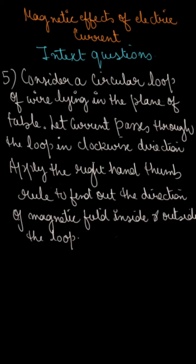Let's look at question number 5. Consider a circular loop of wire lying in the plane of a table. Let current pass through the loop in a clockwise direction. Apply the right-hand thumb rule to find out the direction of the magnetic field inside and outside the loop.